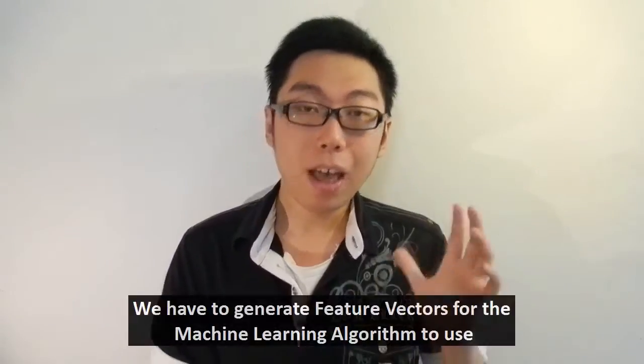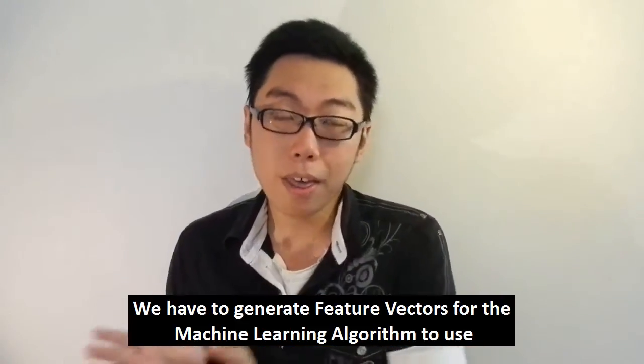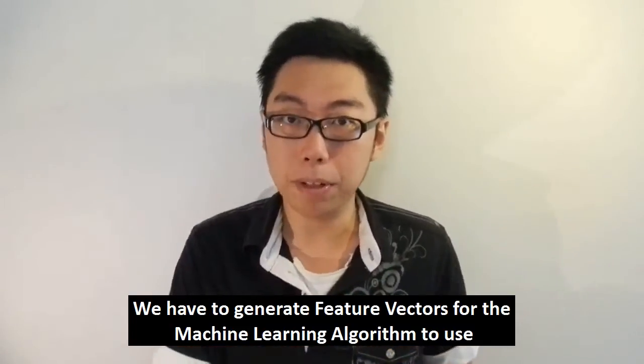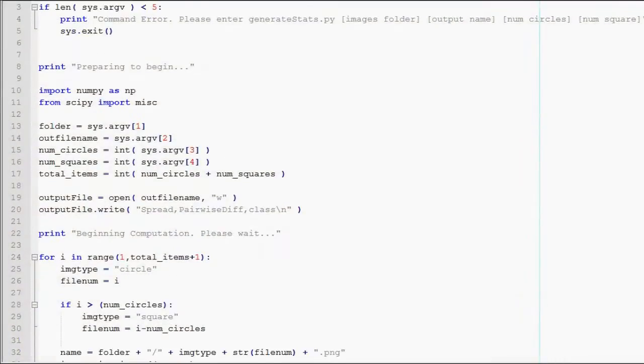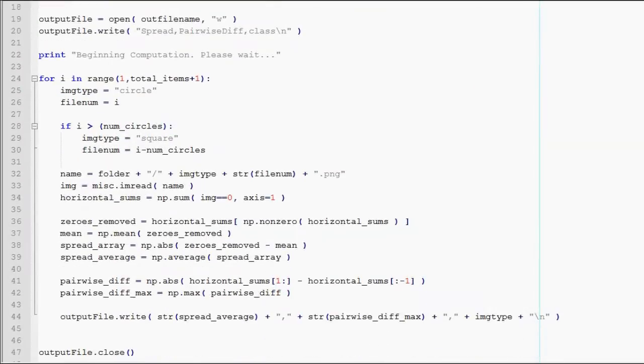Instead, what we need to do is we need to extract what are known as feature vectors. These are the things that will be fit into this statistical model and that is basically what the algorithm will use to learn about the input data. To achieve this, I've written a little utility in Python and the whole idea is we want to look out for two things. First, we want to look at all the horizontal lines in the image that are not completely empty and what we want to do is we want to see how many pixels are being colored black.